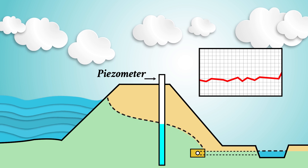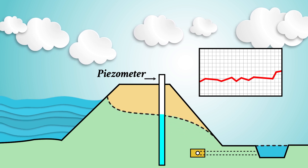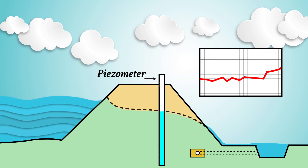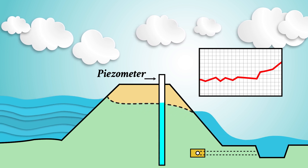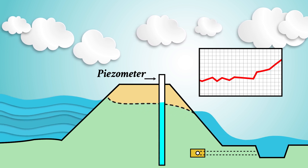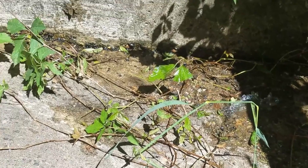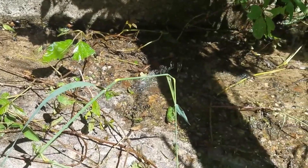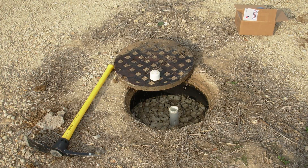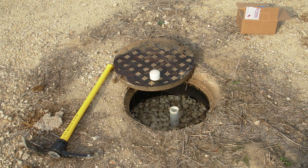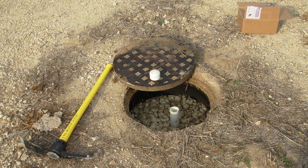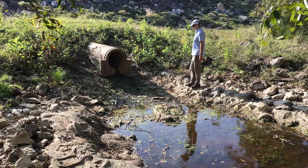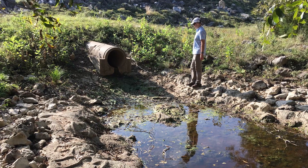You should monitor any area of seepage and discharge from the internal drainage system on a regular basis to determine whether it's increasing, decreasing, or holding steady. Seepage measurement can be as simple as recording the time it takes to fill a bucket of a known volume. You can monitor these parameters automatically by connecting instruments to a data collection system, or simply record them manually on a periodic basis.